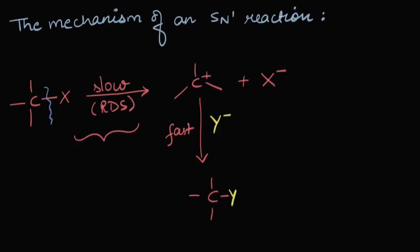I hope you remember the reaction mechanism of an SN1 reaction. We talked about how the bond between the carbon and the leaving group breaks, a carbocation forms, and the attacking nucleophile swiftly attacks and forms the product. We also talked about how step one was actually the slowest step — this bond breaking was important because this step was the rate-determining step.